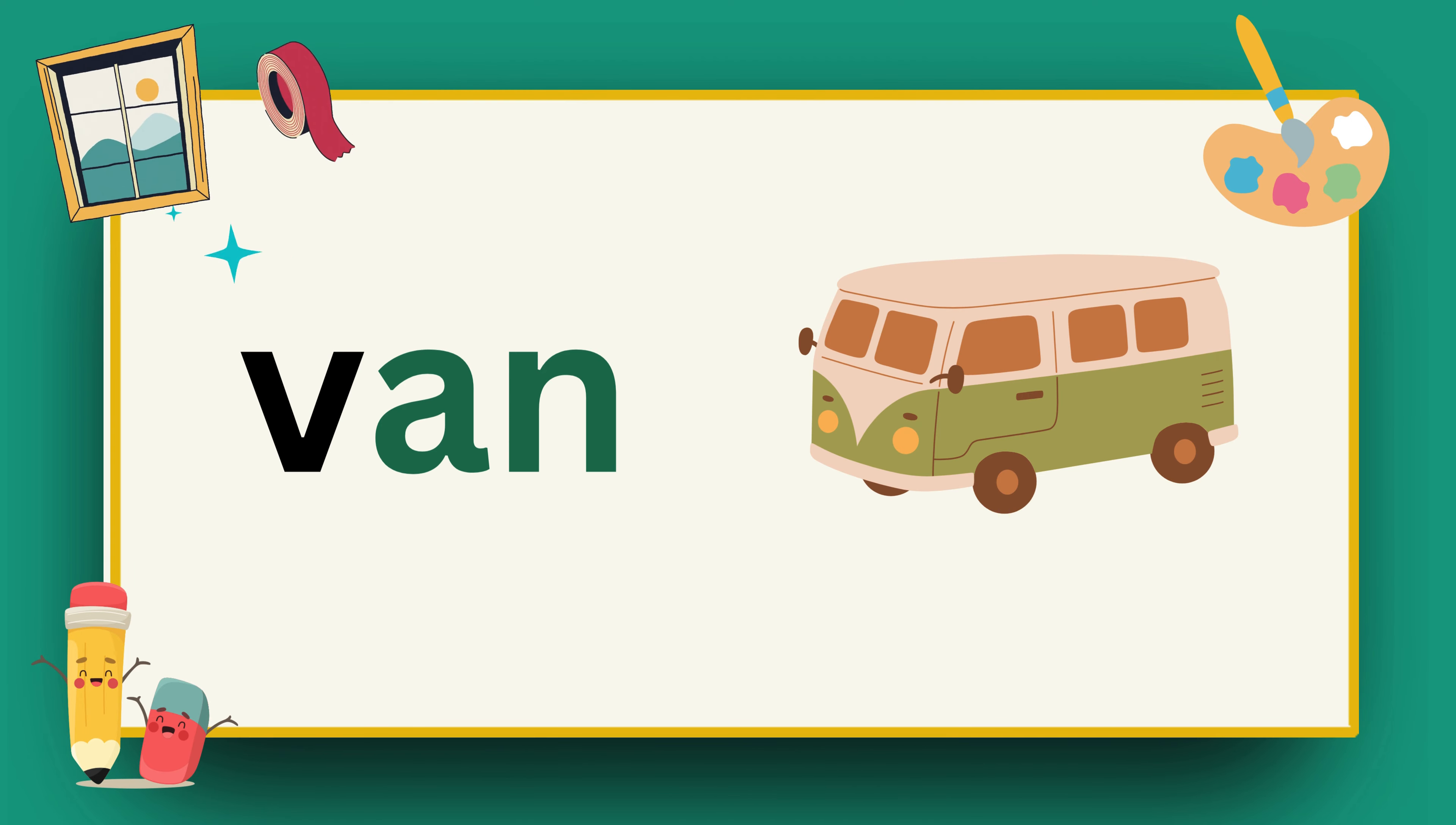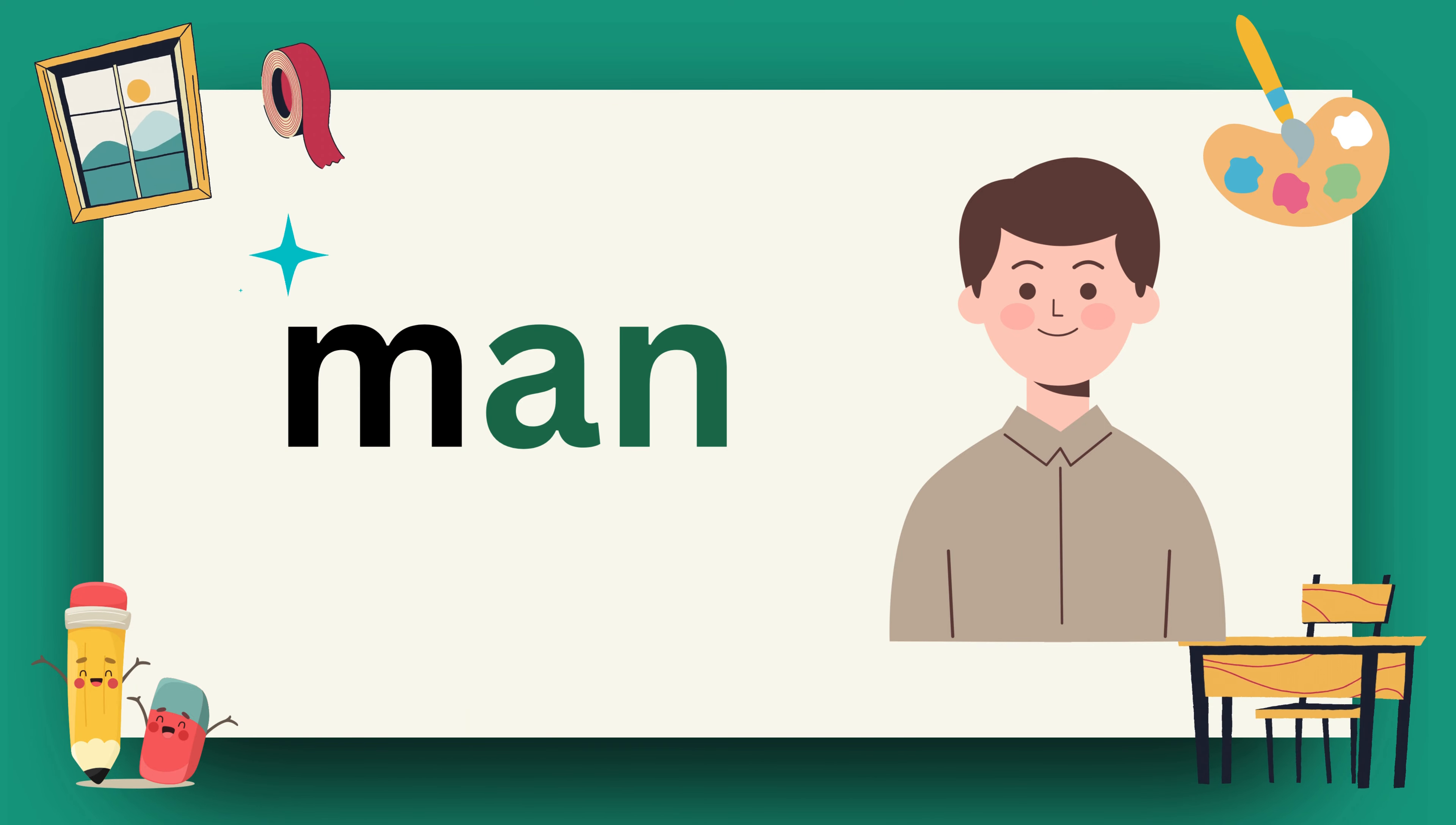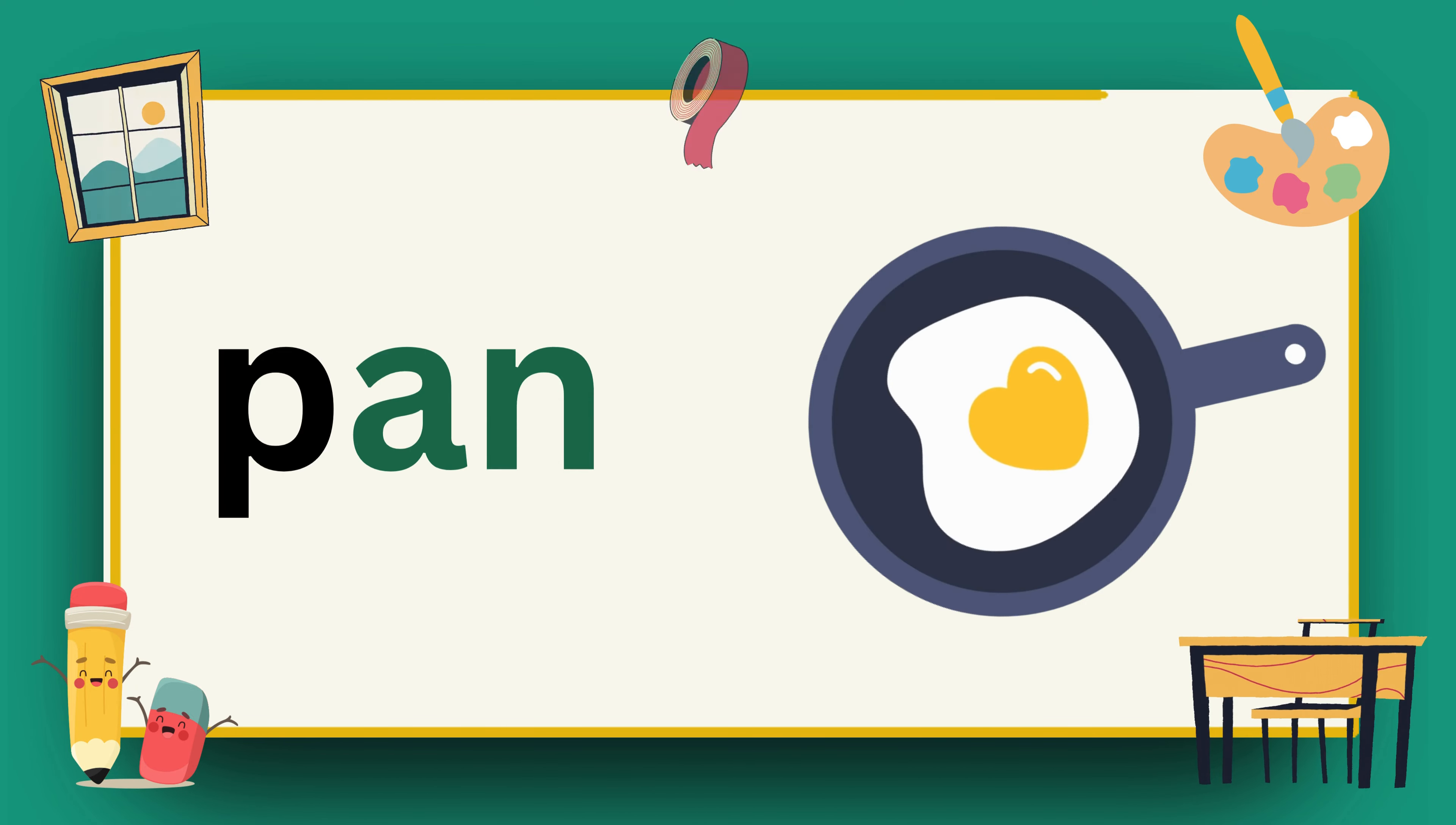Now let's move to AN words. B, A, N, man. M, A, N, man. P, A, N, hat.